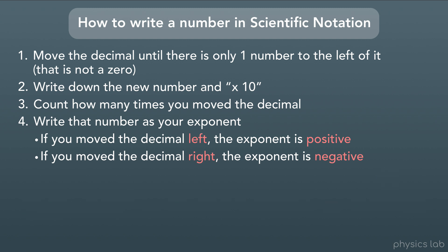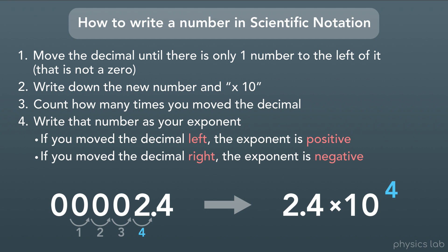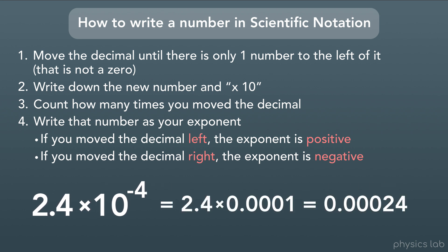Let's try one example going the other way, using 0.00024. We move the decimal to the right until only one non-zero number is to the left of it — that's 4 places, stopping when 2 is to the left. We write 2.4 times 10. We moved the decimal 4 times to the right, so the exponent is negative 4. So 0.00024 written in scientific notation is 2.4 times 10 to the negative fourth. If we type that into our calculator, we get back our original number, 0.00024.